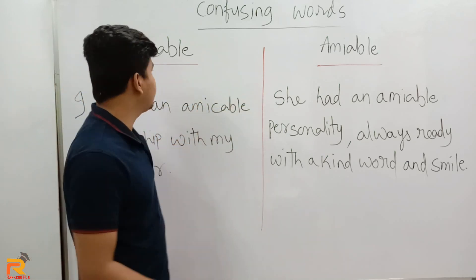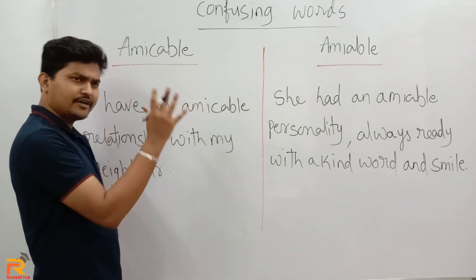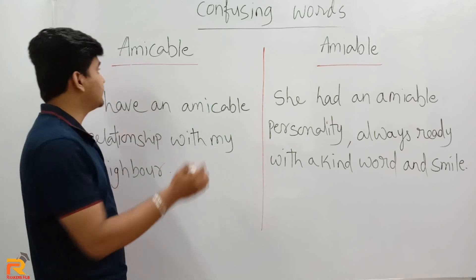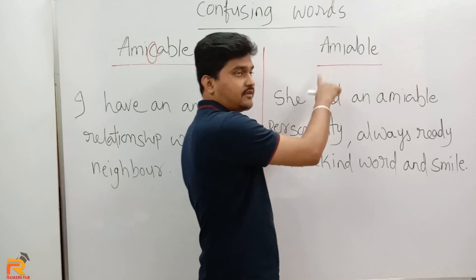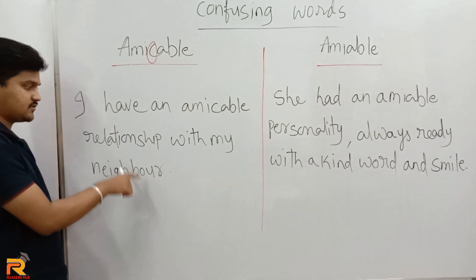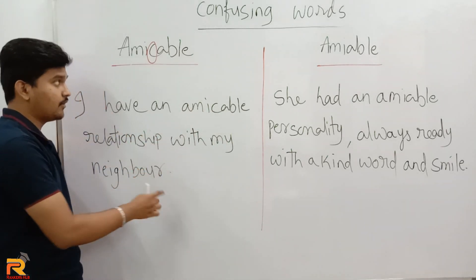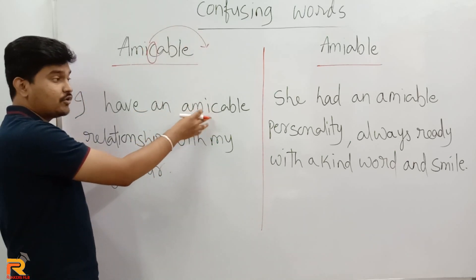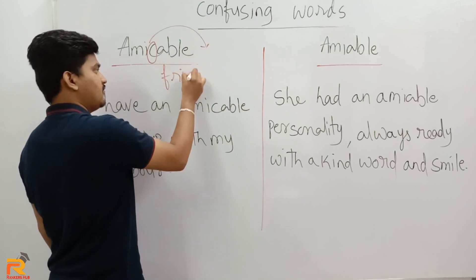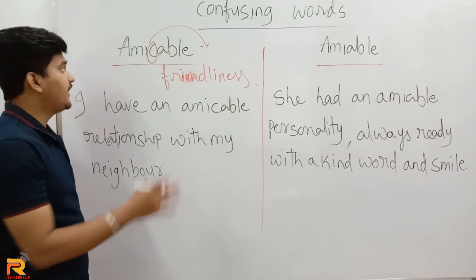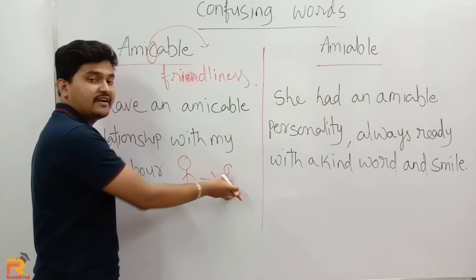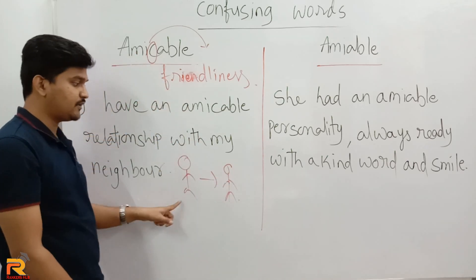The next pair of words is 'amicable' and 'amiable.' These words are closely related in meaning but there is a noticeable difference. The spelling difference is the letter C — amicable has a C, amiable does not. Consider the sentence: 'I have an amicable relationship with my neighbor.' Amicable always shows friendliness. It is used when talking about the relationship between two persons or groups, denoting a friendly relationship.